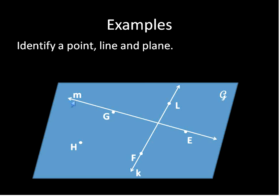If we're going to identify a line, we could say this one here is line EG or GE. Or because it has a lowercase m, we could call it line M. This line here we could call FL or LF. Or we could call it line K with a lowercase k.